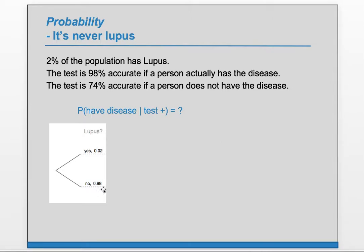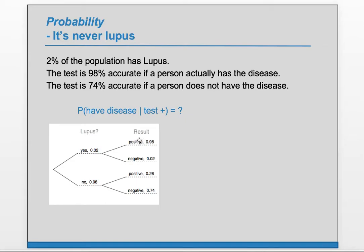It's best to record these probabilities as decimals. Next, our second branch is whether the test result is accurate. When yes — has the disease — the test is 98% accurate. So accurate would mean a positive result. Here we have 98% positive given that yes, they have the disease, and 2% negative given that yes, they have the disease — those correspond to incorrect results. When the person does not have the disease, it's 74% accurate, meaning we get a negative because they don't have the disease. And 26% of the time we'll get the incorrect or inaccurate result.